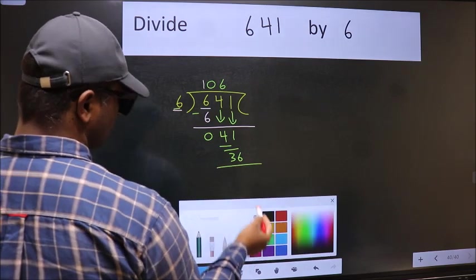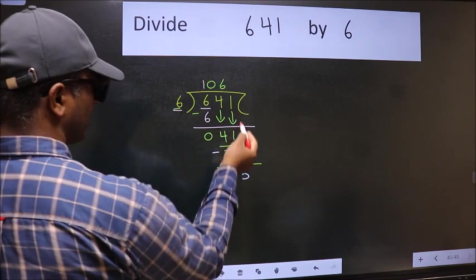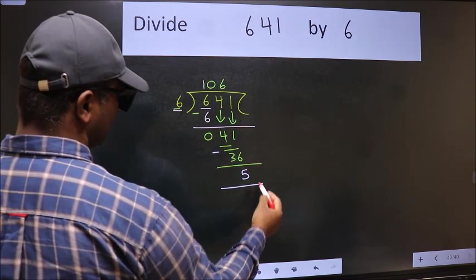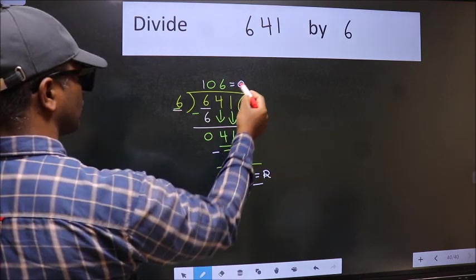Now we should subtract. We get 5. No more numbers to bring it down, so we stop here. This is our remainder and this is our quotient.